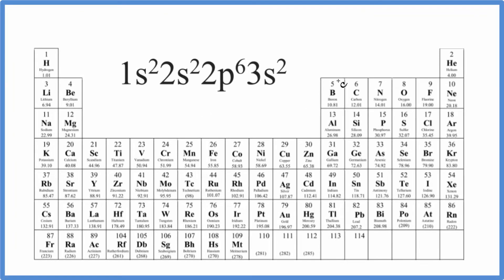In this video, we'll figure out which of these elements on the periodic table corresponds to the electron configuration 1s²2s²2p⁶3s².